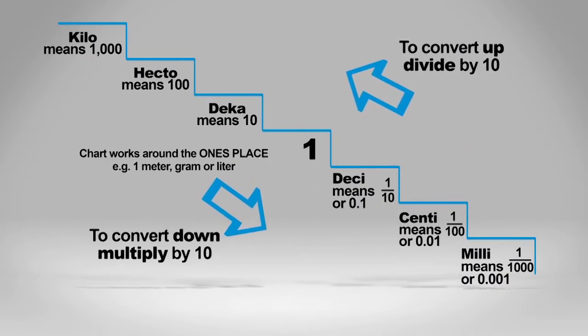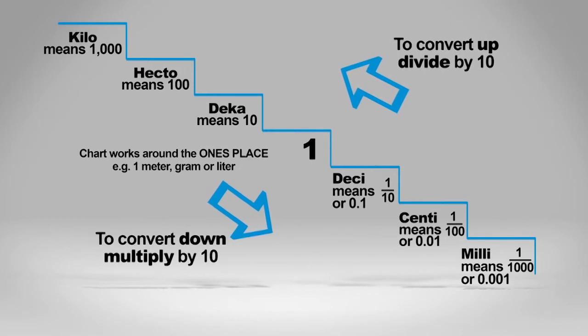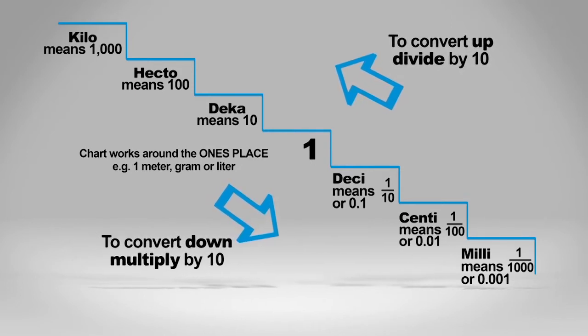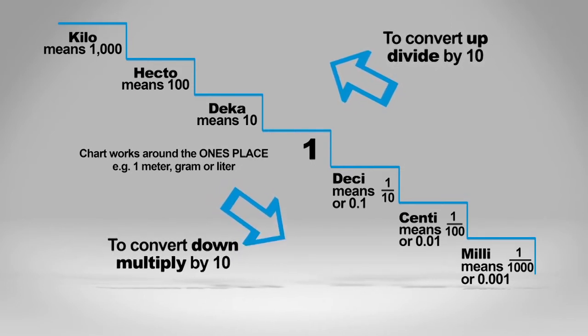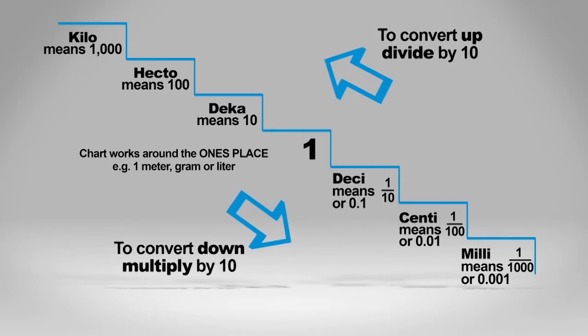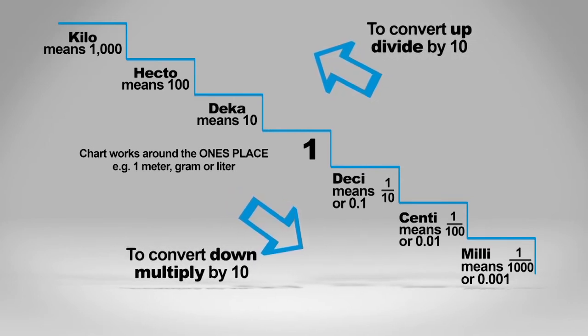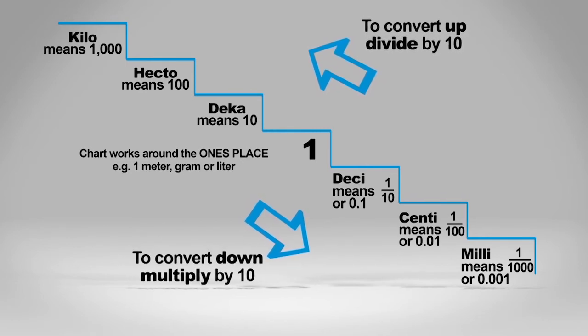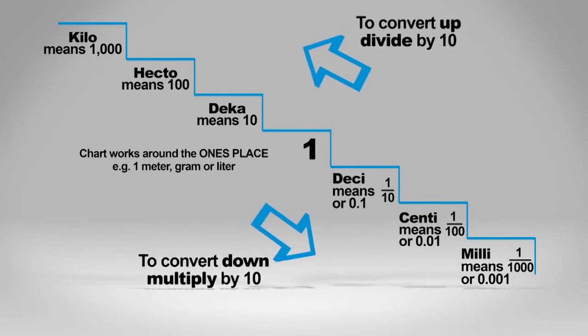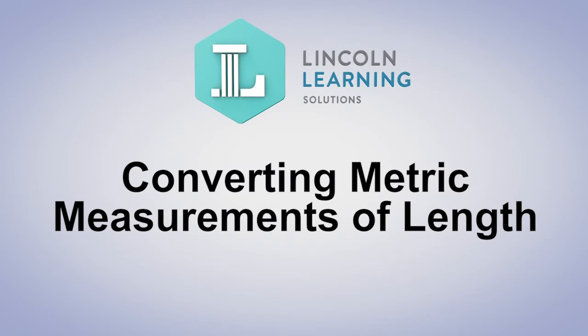When dividing, you move the decimal point to the left. When multiplying, you move it to the right. Think of it this way. Moving the decimal point to the right makes a number bigger and so does multiplying. On the other hand, moving the decimal point to the left makes a number smaller, as in dividing. Now you can convert common measurements of length using the metric system.